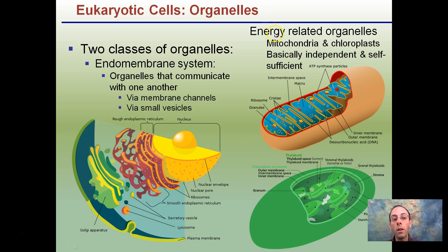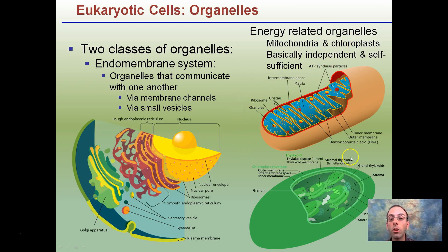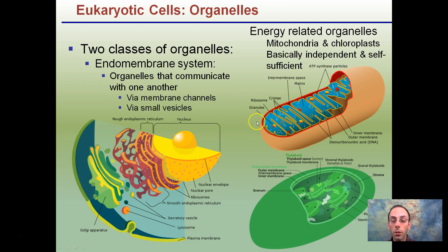The other type are the energy-related organelles: the mitochondria and the chloroplasts. These are both independent and self-sufficient — they generate their own energy. There are a lot of folds in both, giving a high surface area to volume ratio. Mitochondria are present in all cells, while chloroplasts are only present in plant cells because they carry out the process of photosynthesis.